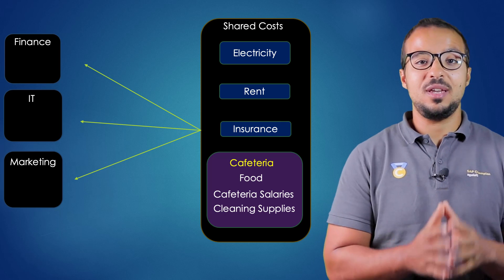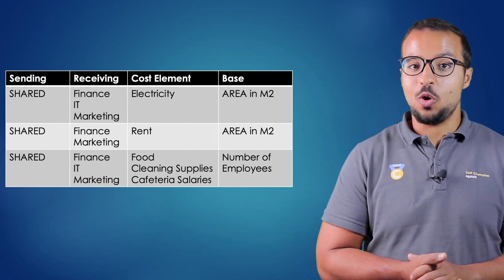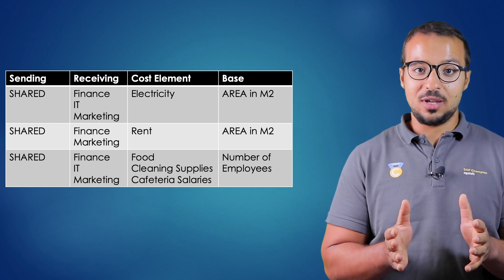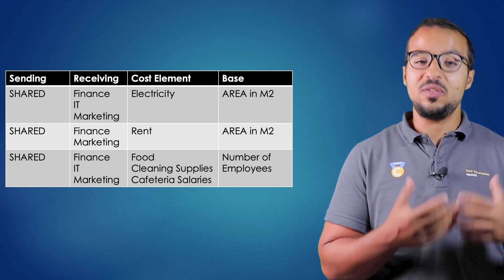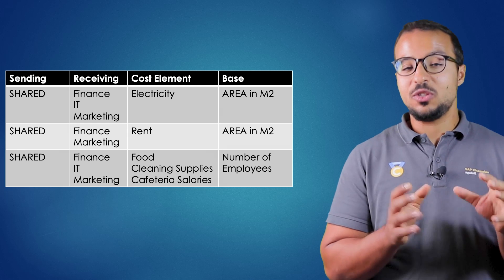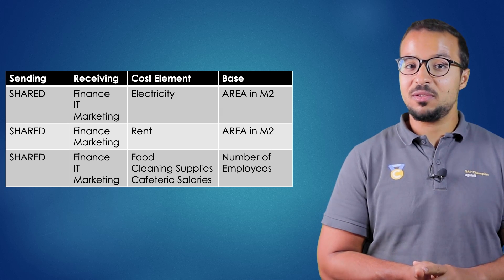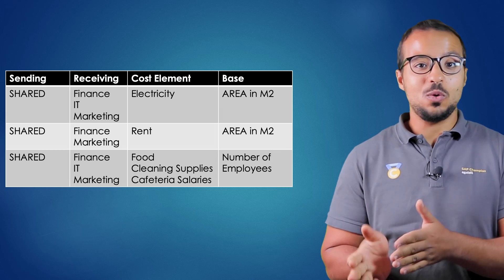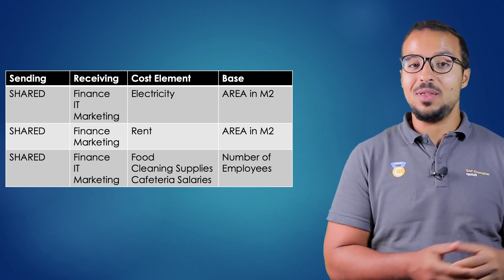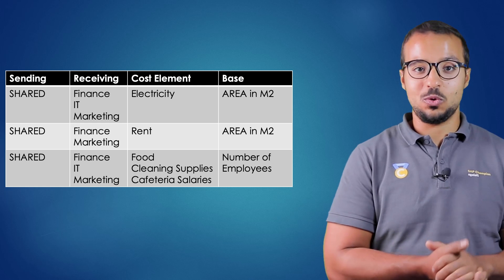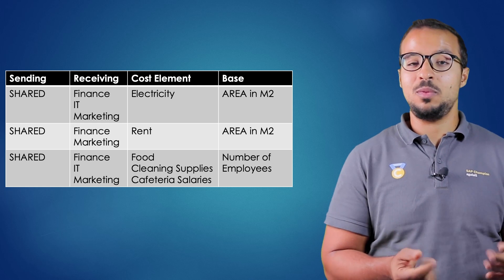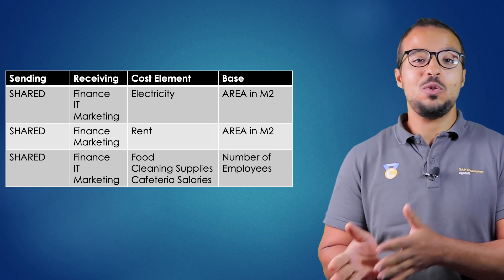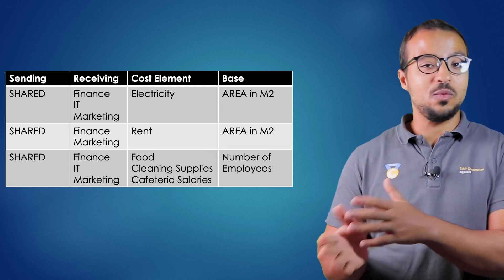We can do this by creating a cost allocation cycle, which is a master data object created by an authorized accountant. It can be run at the end of every period to allocate the costs. Inside the cost allocation cycle, we have different segments. For every segment, we specify the sending cost centers, the receiving cost centers, and the cost elements. For example, the sending cost center would be our shared expenses cost center, and the receiving cost centers would be the different departmental cost centers.